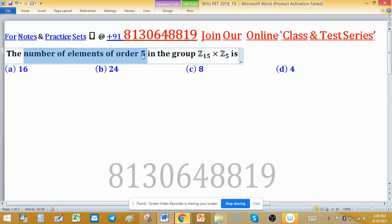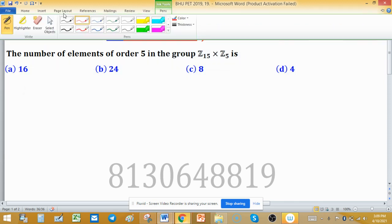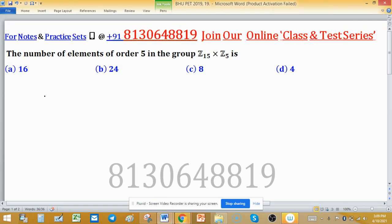The number of elements of order 5 in the group Z₁₅ × Z₅. We are seeking elements of order 5, meaning if an element (a,b) is in Z₁₅ × Z₅, then its order must be 5.